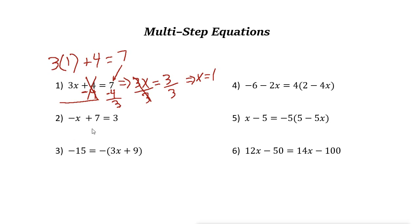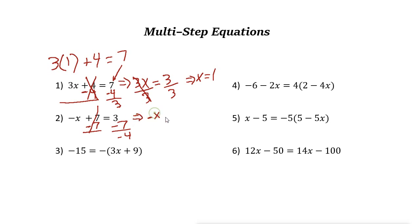Next one. Here the variable is on one side, and it is added to 7. So use the inverse operation of addition, which is subtraction — minus 7 from both sides. These two cancel out. And 3 minus 7 is negative 4. So from this operation we have negative x equals negative 4.